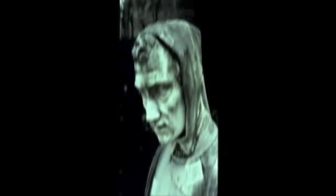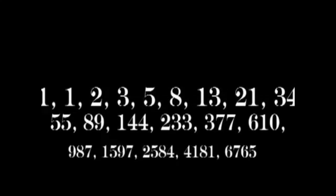Revealing to all who see it who was there. Around 1200 AD, a man named Leonard Pisano — better known as Fibonacci — discovered a sequence of numbers that created a very interesting pattern. The sequence begins with the numbers 1, 1, 2, 3, 5, 8, 13, 21, 34, and continues indefinitely.